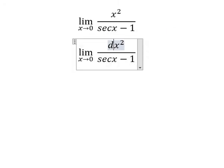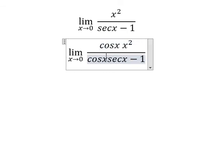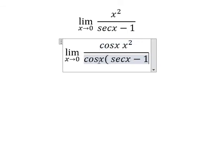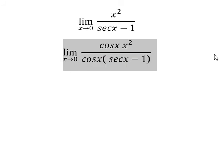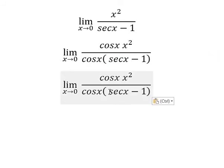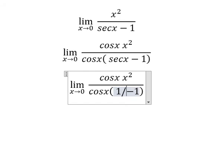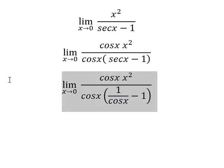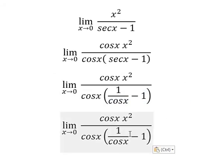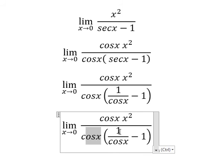We need to multiply by cosine x on numerator and denominator. We know that secant of x is about 1 over cosine x, so cosine x multiplied by this one and this one.